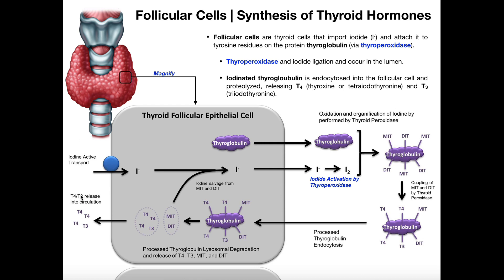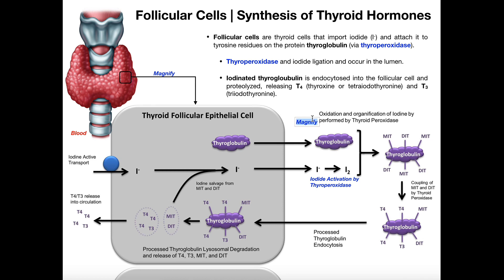On the left side would be where the blood is — I can color that red. Over on the other side, this region is called either the lumen or the colloid; those are each valid terms. This is the follicular cell itself, and the follicular cells are arranged in a circle, so the central part of that circle is the lumen or the colloid.